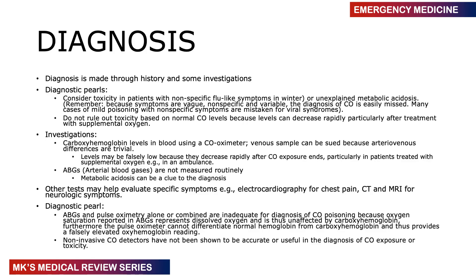Do not rule out toxicity based on normal levels of carbon monoxide, because once a patient is removed from exposure and placed in normal air, the levels drop very quickly. Investigations include carboxyhemoglobin levels measured using a carbon monoxide oximeter — venous blood can be used, as the difference between arterial and venous values is minimal. Levels may be falsely low because once exposure ends, especially if the patient received oxygen in the ambulance, carbon monoxide levels drop drastically.